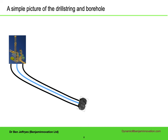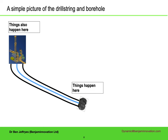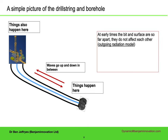So what have we got? We have a long thin system, with a lot going on at the bottom and a lot going on at the top. Between them, the main thing happening is waves going up and down, at finite speed. There is a delay between something happening at the bit and that something being seen at the surface, then another delay before the response gets back down to the bit. That cumulative time is called the two-way time. On timescales smaller than the two-way time, we can study what happens at the bit and ignore the surface response — it might as well be at infinity. This is often called an outgoing radiation model, because waves head up the drill string and on these timescales they don't come back.